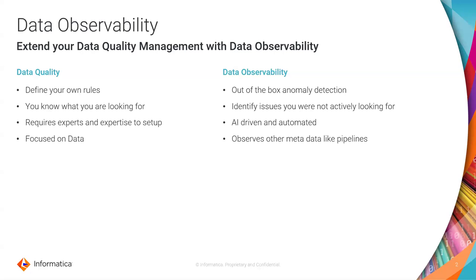Customers tell us that they typically operate reactively — they have a data issue, create rules to identify it in the future, and prevent it from affecting them again. Data observability, because it looks at all the data — even data that you haven't created rules for — will help you bridge that gap. Setting up data quality rules requires experts and expertise; you need to know your data. Data observability, on the other hand, is AI-driven and automated.